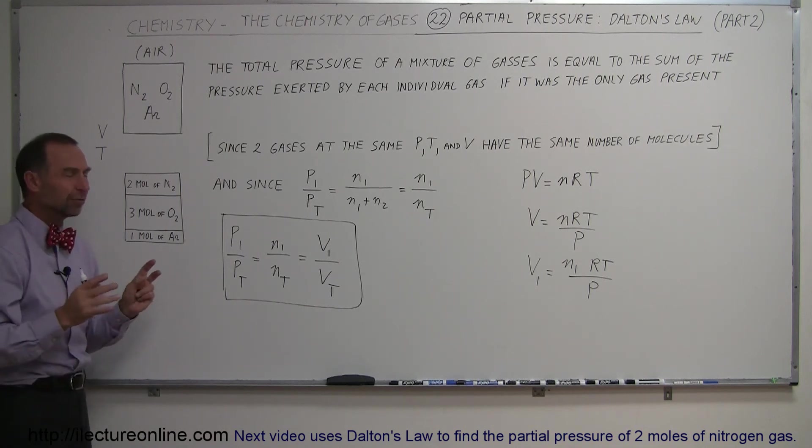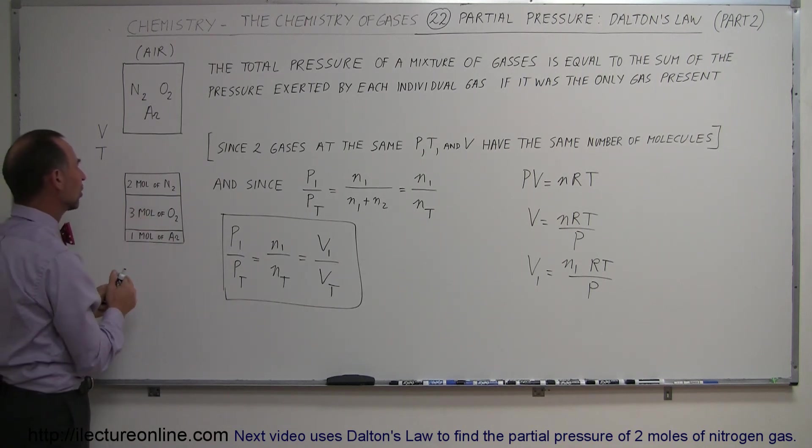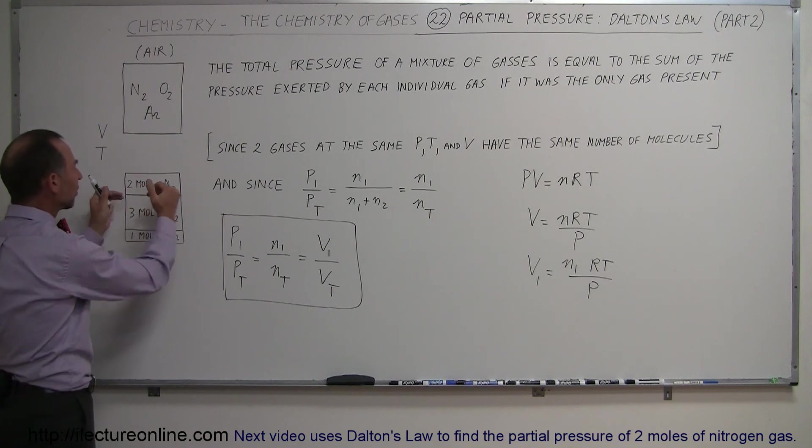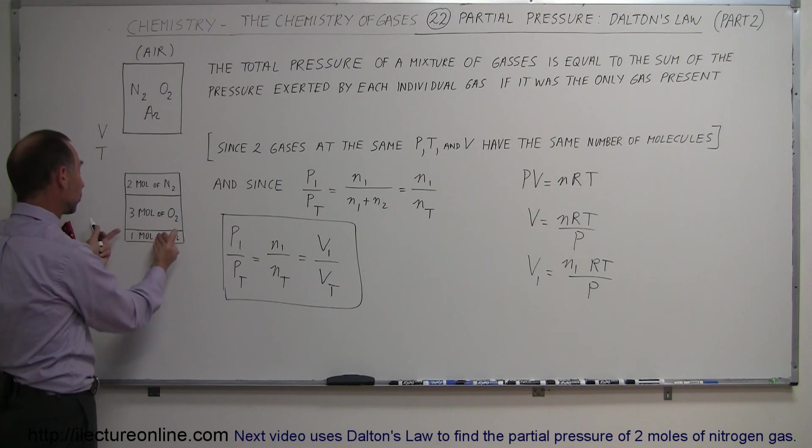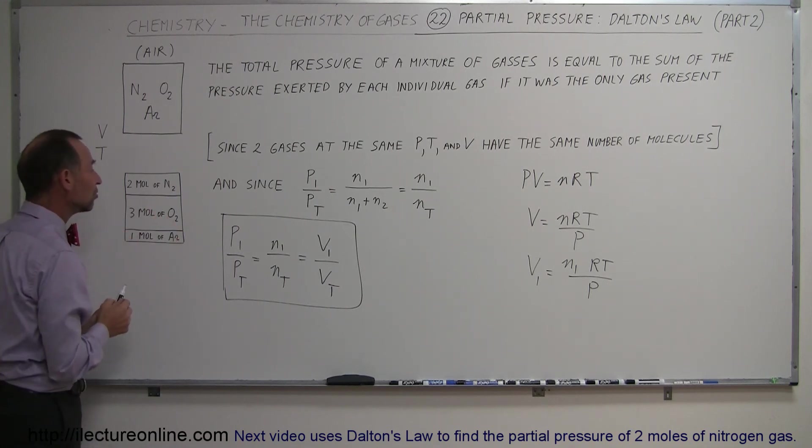Now, of course, in real life, all the gases intermix with each other, but if you could put them into separate compartments to just figure out how much partial volume they contribute, it would be proportional to the number of moles, and it would be proportional to the partial pressure of each gas.